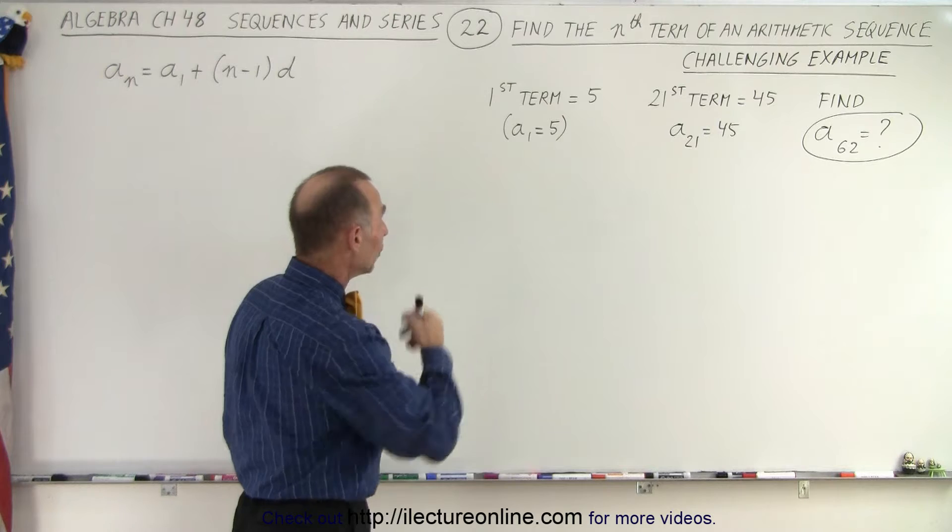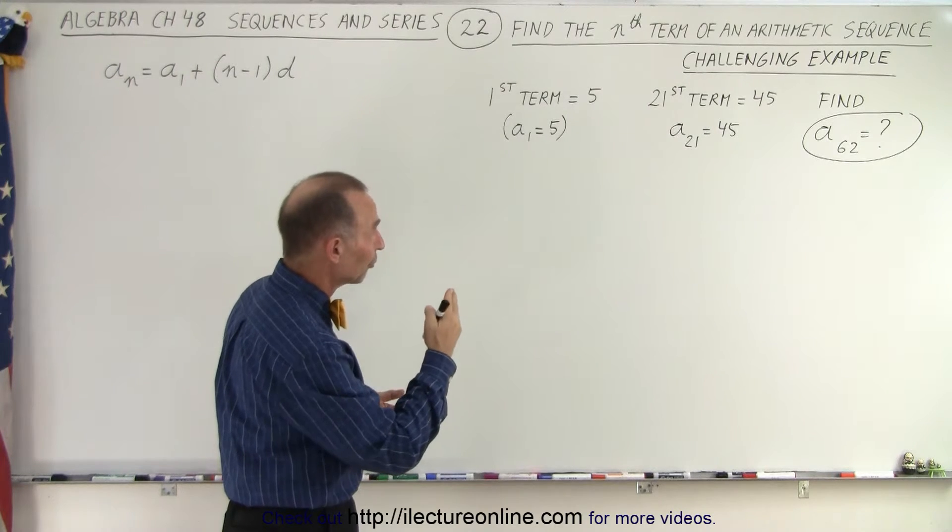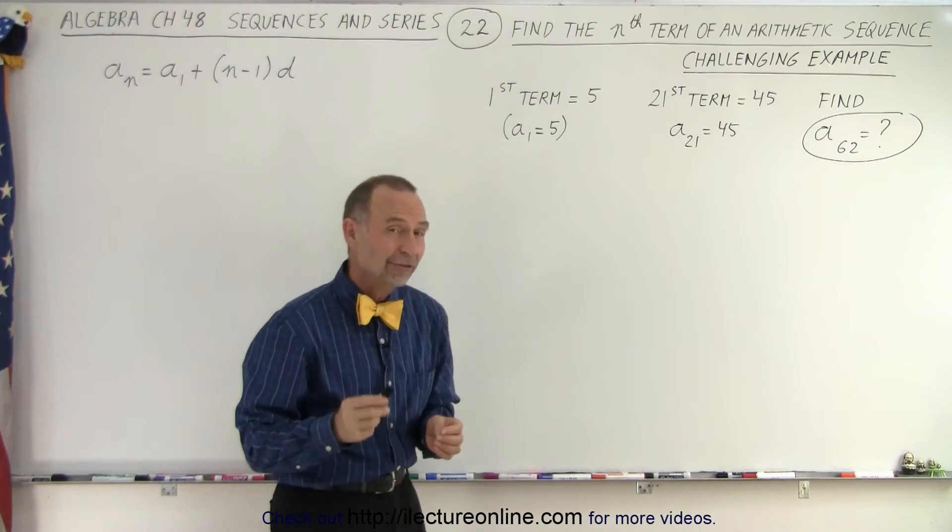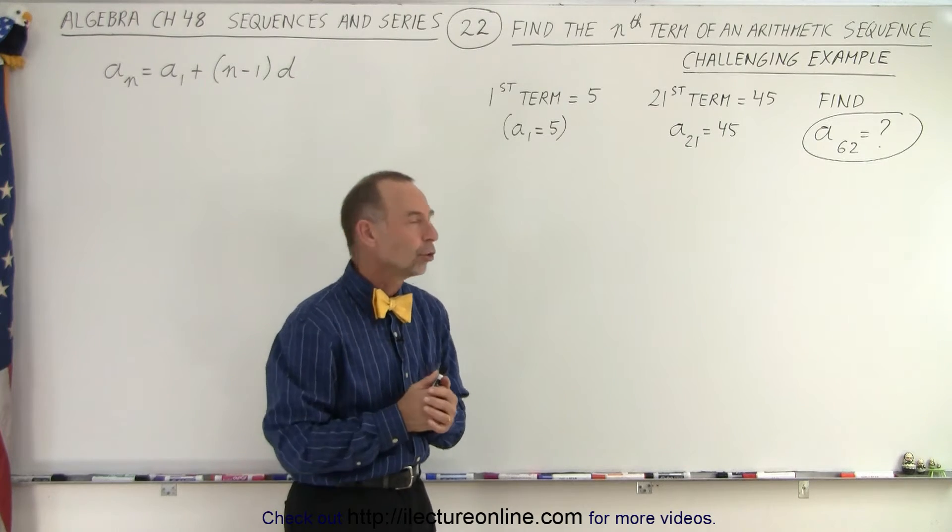They tell us that the first term, A1, is 5. The 21st term, A21, is 45. And they ask us to find the 62nd term.